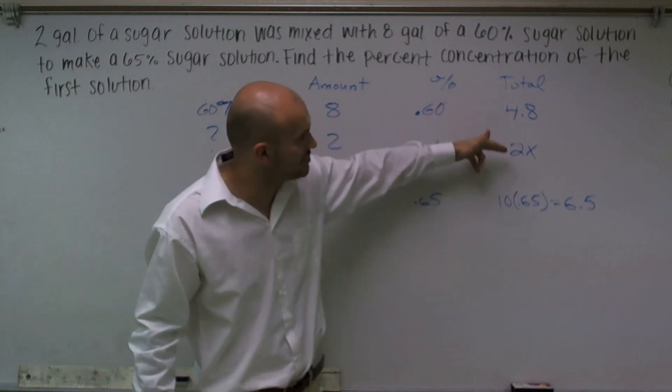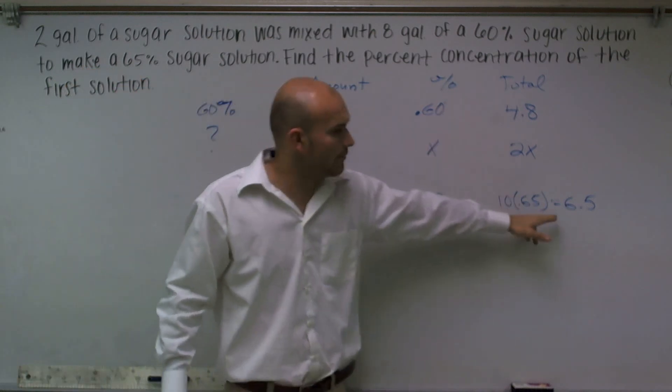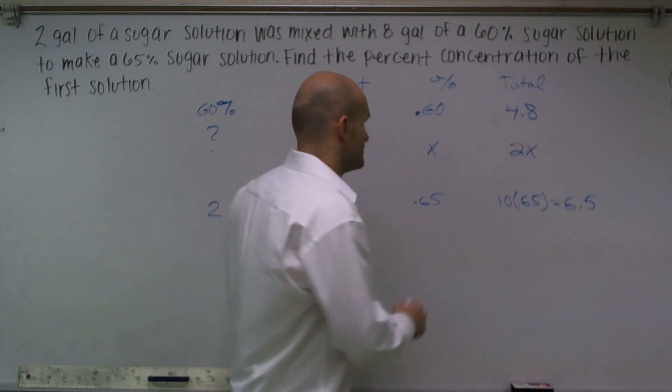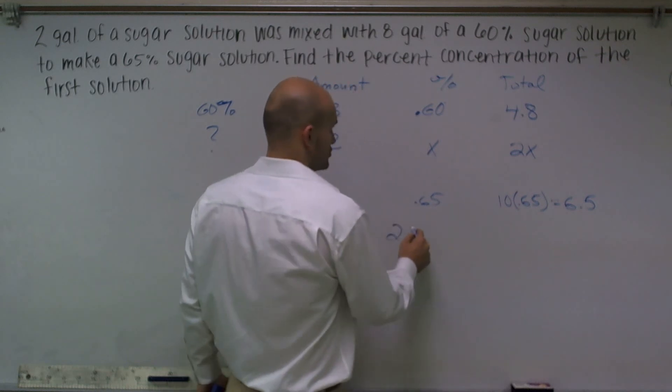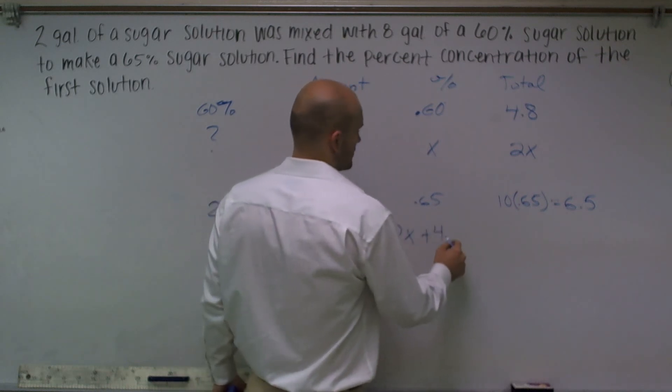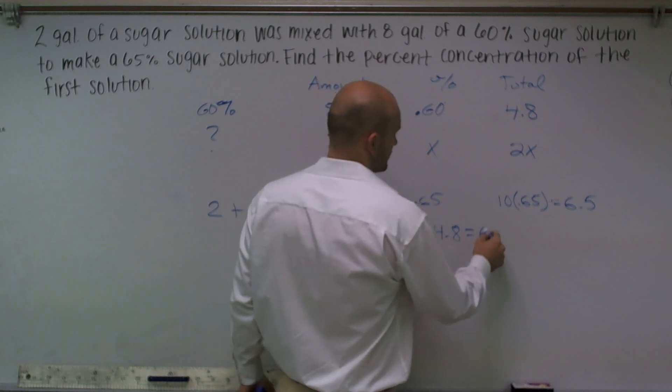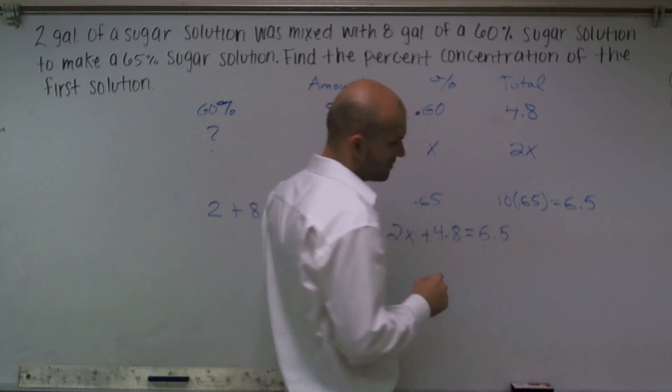If I add these two up, I want them to equal 6.5. So I can write 2X plus 4.8 equals 6.5.